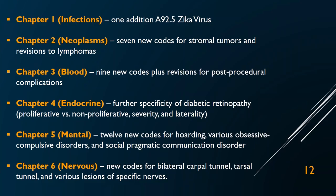Chapter 5 covers mental and behavioral health disorders — the F codes. There are only 12 new codes, for hoarding, obsessive compulsive disorders, and social pragmatic communication disorder. Chapter 6 is your nervous system diagnoses. They added bilateral codes for nerve-related issues in the extremities — previously you would have coded both right and left separately, but now there's a single bilateral code. So if someone has bilateral carpal tunnel or bilateral tarsal tunnel, there's a code for that. Just a few changes, but you need to be aware of what they are.